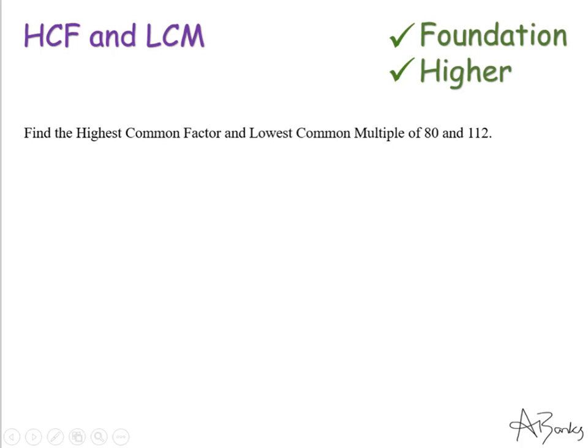Hello everyone and welcome to my online lesson on highest common factor and lowest common multiple. This video is going to cover how we do this for larger numbers, such as 80 and 112. If the numbers are much smaller, it is usually easier to list their factors and find the highest one in common for HCF, or list their times tables to find the first shared number for LCM. But with bigger numbers like these, we need a more efficient method.